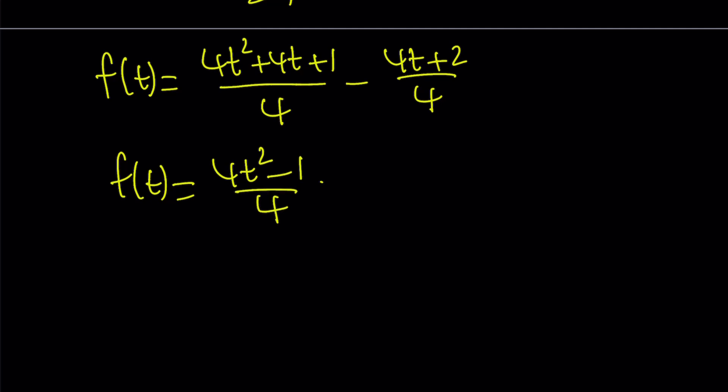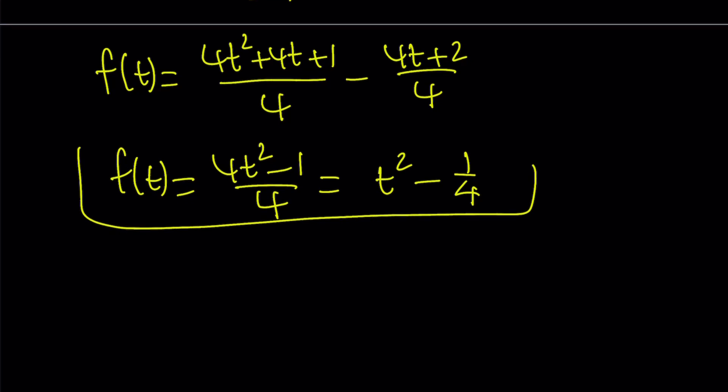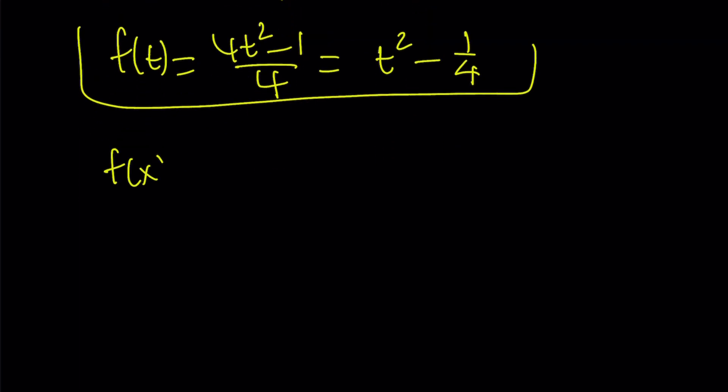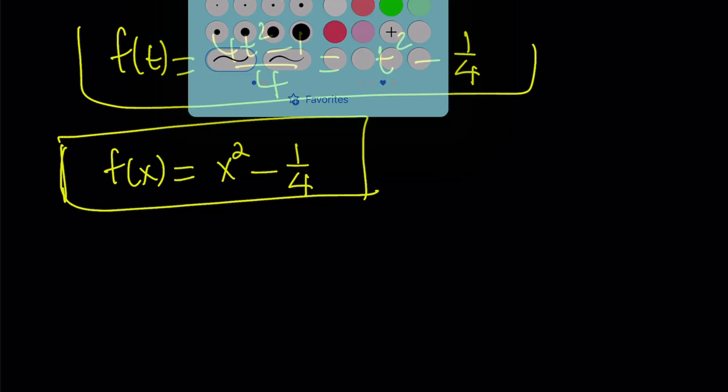Obviously, you can go ahead and separate these and write this as t squared minus 1 fourth. But since this is f of t and I want to write f of x, I'm just going to replace t with x. Again, variables don't matter here. x squared minus 1 over 4. That is going to be our f of x. And this brings us to the end of the first method.